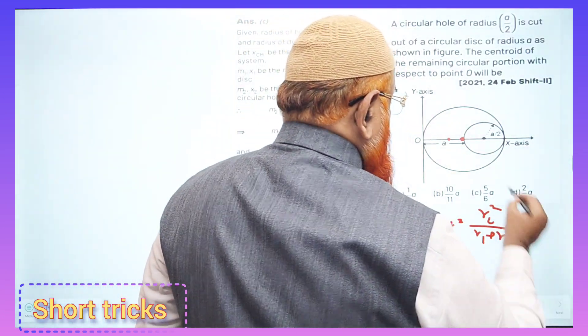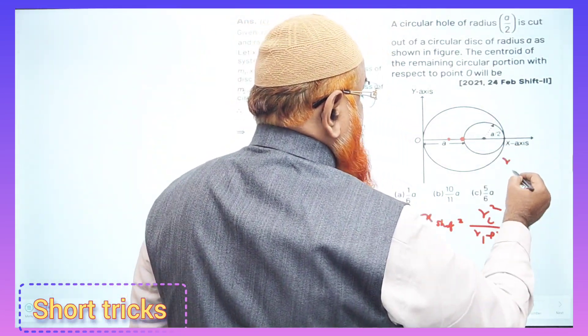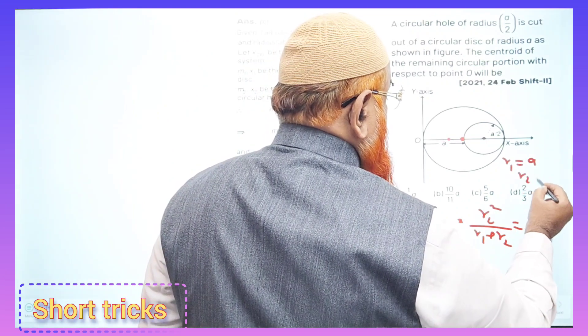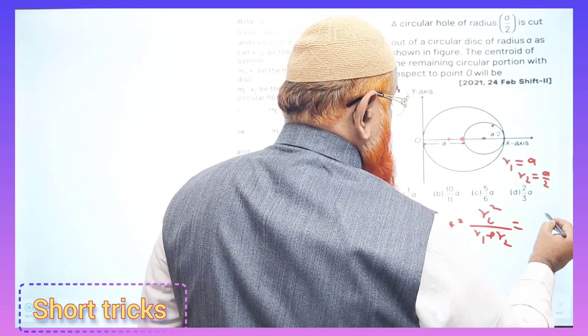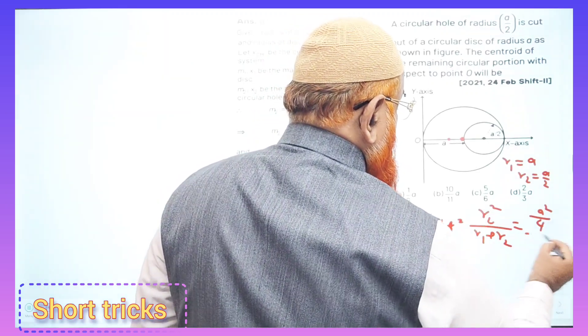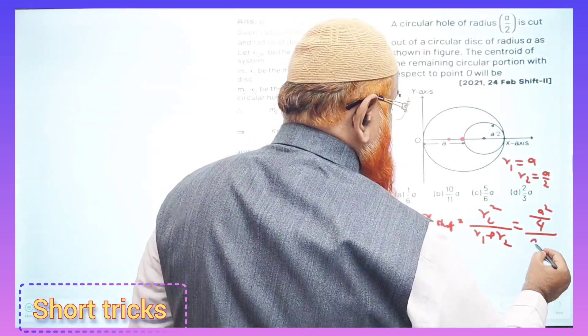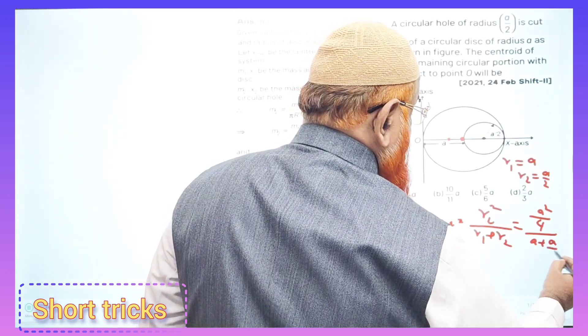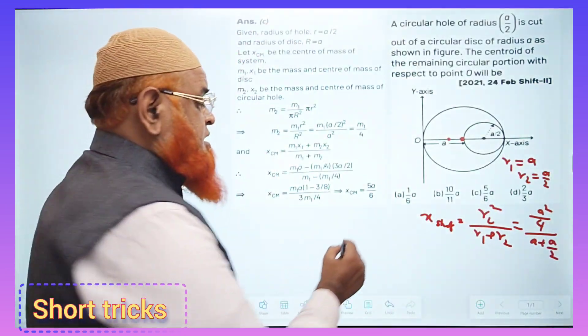Here you all know that r1 is nothing but a and r2 is nothing but a/2. So here a/2 squared is nothing but a²/4 divided by r1 plus r2, which is nothing but a plus a/2. Therefore, what are we going to get?